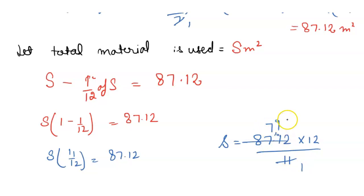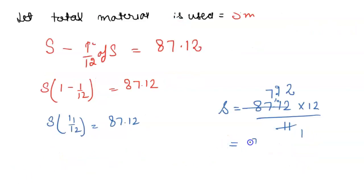Nine elevens are 99, 11, two elevens are 22. So here 7.92 times 12 is 95.04 meters squared material is used. Thank you.